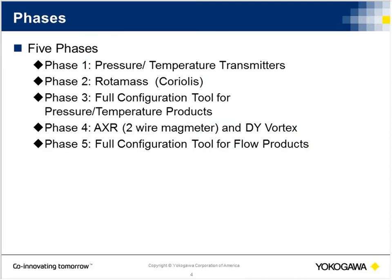The phases we are working through are: Phase 1 is pressure and temperature, Phase 2 is Rotomast, Phase 3 is the full configuration of pressure and temperature, Phase 4 is the magnetic flowmeters and DY, and Phase 5 is full configuration. We broke up pressure and flow mainly because we wanted to get the general dimensions of the transmitters and flow meters onto the site first. Right now we do not have the flow meters on the site — only pressure and temperature — but we are working on the MAGs and DYs. We hope to have them up by end of fiscal year 2016, or fiscal year 2017 at the latest, aiming for a fully functional site.